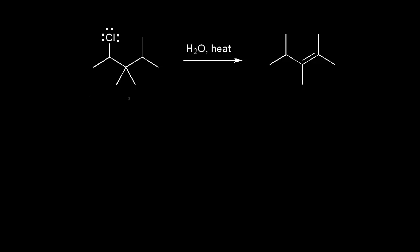Our goal is to show a mechanism for this E1 reaction, going from the alkyl halide on the left to the alkene on the right. The first step is loss of our leaving group — the electrons in this bond come off onto the chlorine to form the chloride anion, which is a good leaving group. We're taking a bond away from the carbon marked in red, so that's where our carbocation will form.